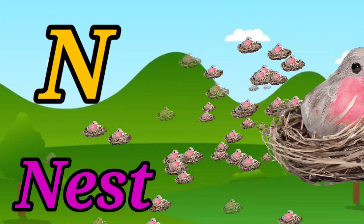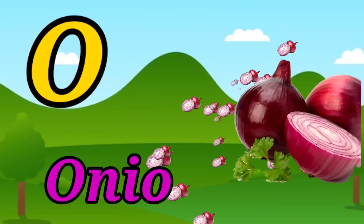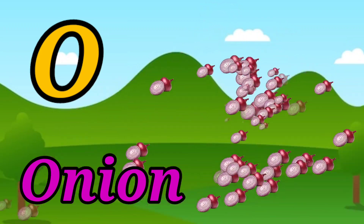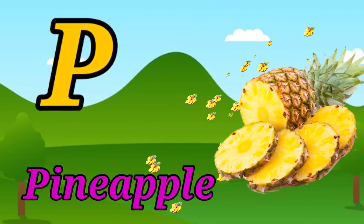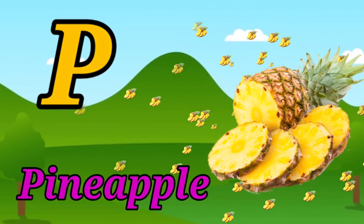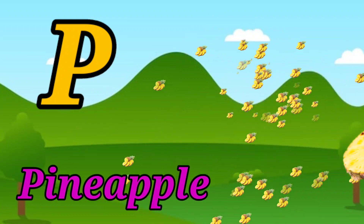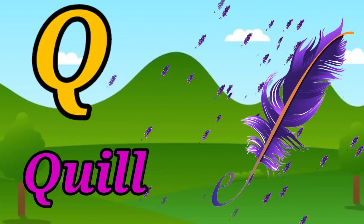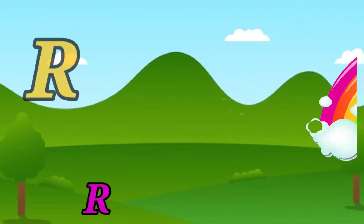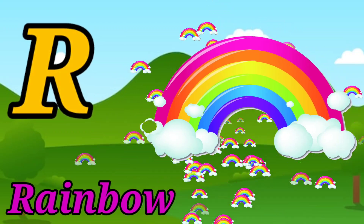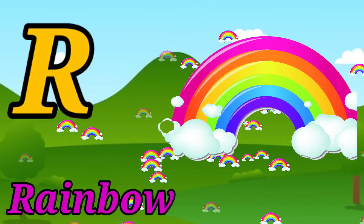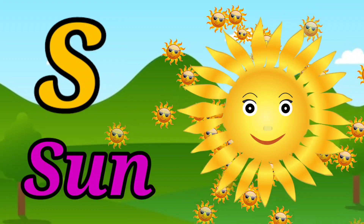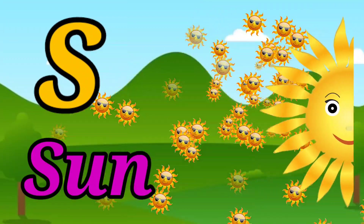N for nest, O for onion, P for pineapple, Q for quill, R for rainbow, S for sun.